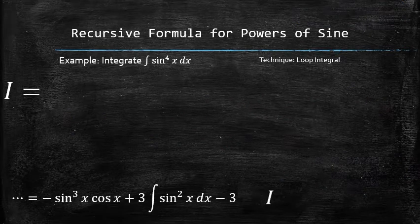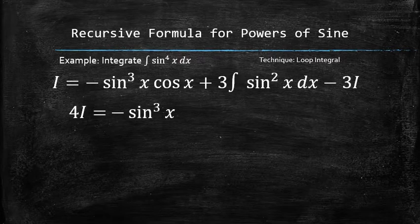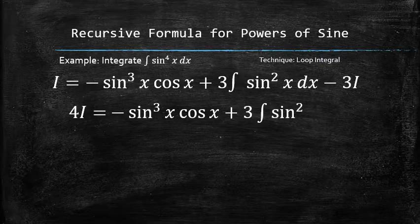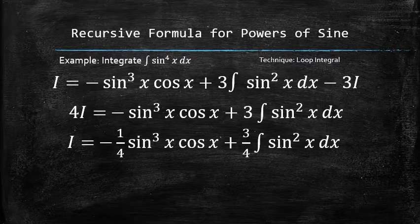After removing all the intermediate results, we now have the following equation in terms of i. To collect all i's on one side, we add 3i to both sides. To isolate i, we divide both sides by 4 and add plus c to the result.